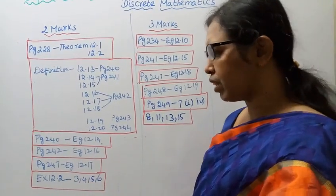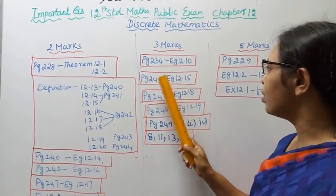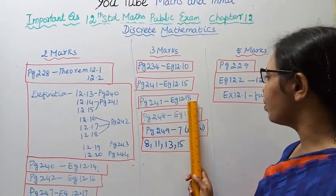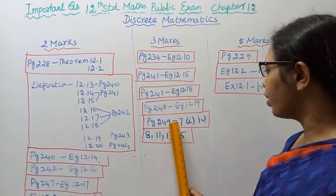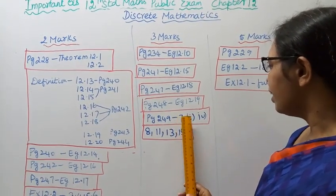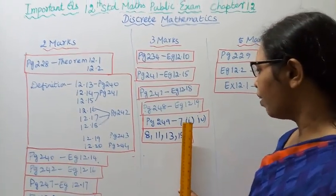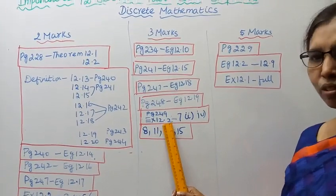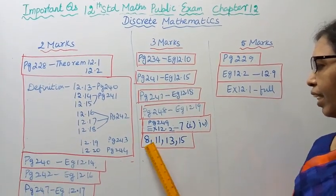3 marks: Page 234, example 12.10, page 241, example 12.15, page 247, example 12.18, page 248, example 12.19, page 249. 7th, 8th, 11th, 13th, 15th.